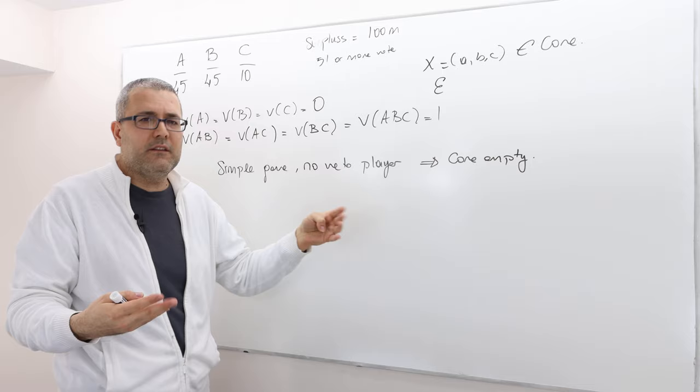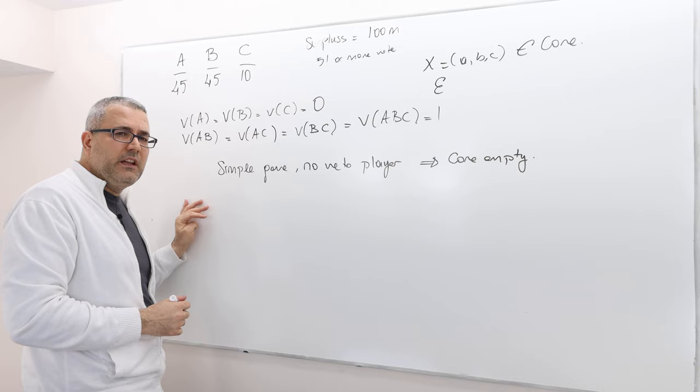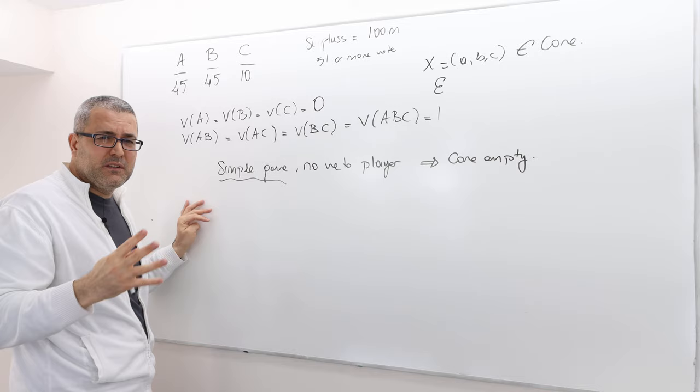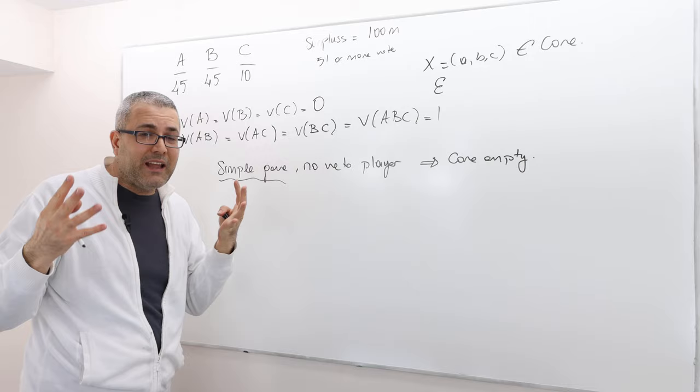Well, so you have to be able to read the theorem. What does it say? It says the game is simple. What does that mean? Remember the definition of simple game? The worth function either takes the value one or zero. That's what it means, a simple game. So this is a simple game.